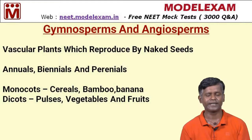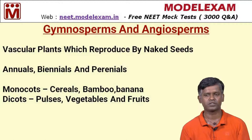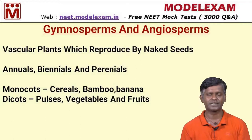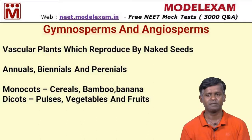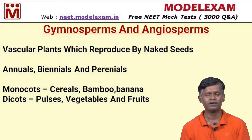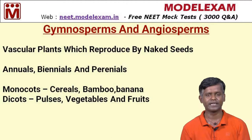Angiosperms are divided into two main categories based on seed cotyledon: monocots and dicots. The best examples for monocots are cereals, bamboo, and banana; for dicots, pulses, vegetables, and fruits. Notably, bamboo flowers only once in its lifetime — this is increasingly asked in competitive exams.